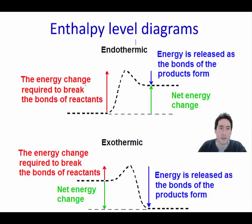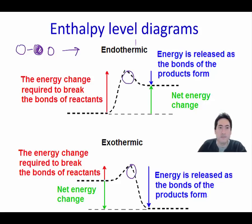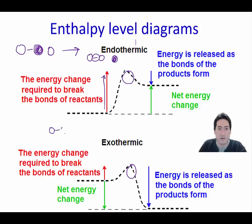Here we have an enthalpy level diagram. There is always an activation energy barrier that needs to be overcome. For an endothermic reaction, it takes energy to break bonds, and the products end up with more energy stored in them — making them less stable. For exothermic reactions, we start with high energy reactants, use a little energy to break bonds, and form a much more stable product with less energy stored.